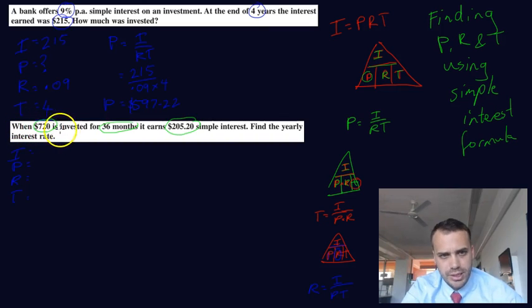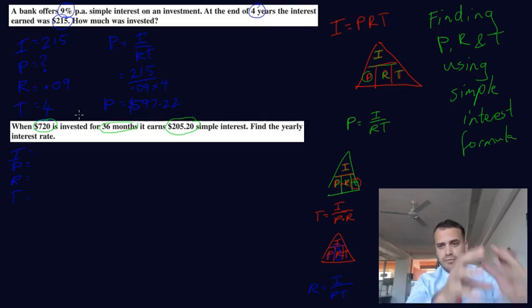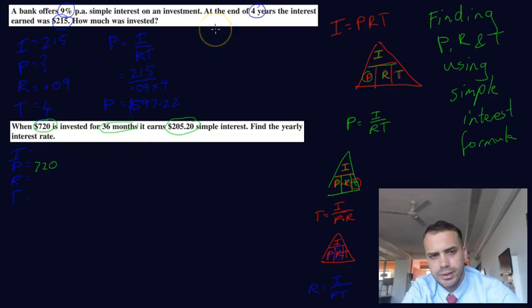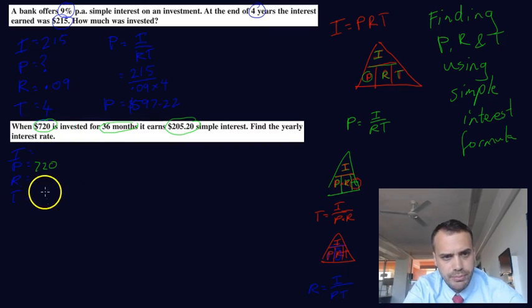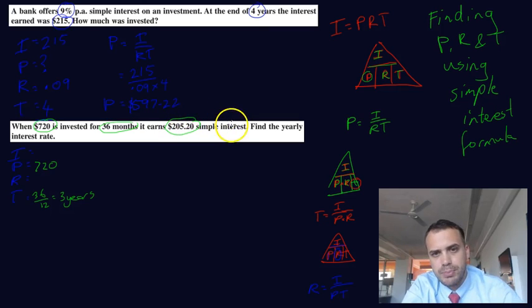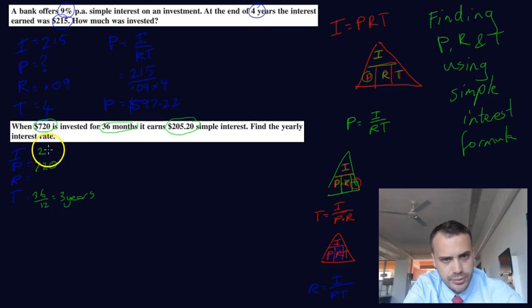When $720 is invested, $720 invested, put in the bank. That must be principle. That's the thing you start with. Invested for 36 months. So 36 months, that must be time. Now we could write, because it's in months, we could write 36 over 12. Now if you put that into your calculator, you'll get three. That's three years. 36 months, three years. Remember we always put our time in years. Now, $205.20, simple interest. That's interest. Find the yearly interest rate. So they want us to find the rate.